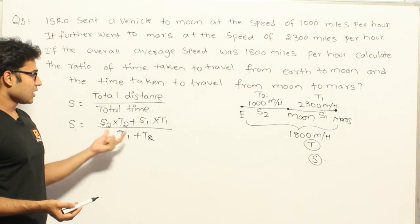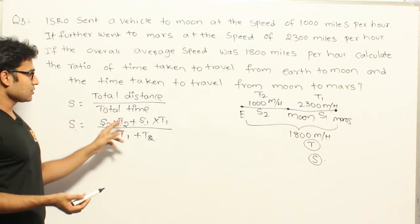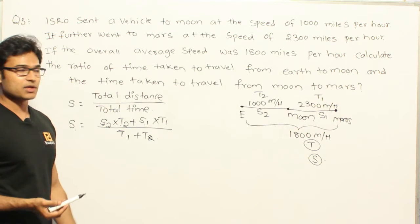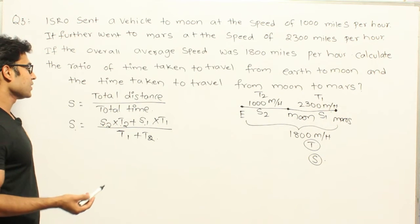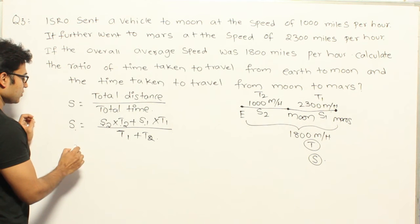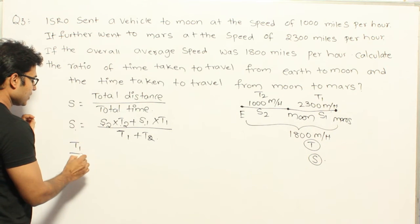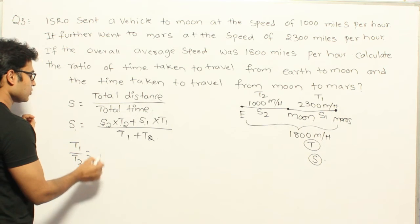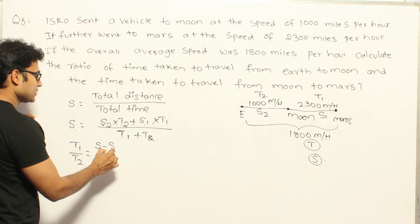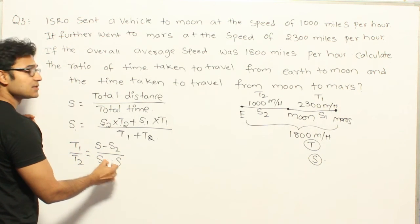Even if you are not able to follow the averages connection, you can cross-multiply and simplify to find the ratio between T1 and T2. If you do that, you get: T1 by T2 equals S minus S2 divided by S1 minus S.